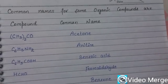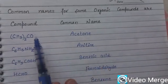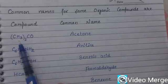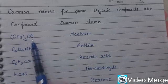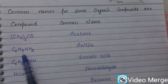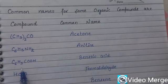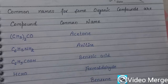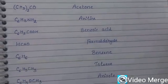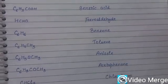Here are certain common names for some organic compounds. For example, the molecular formula CH3COCH3 is called acetone. C6H5NH2 is called aniline. C6H5COOH is known as benzoic acid. These are certain molecular formulas and their common names for organic compounds.